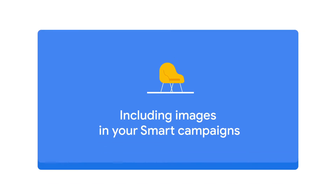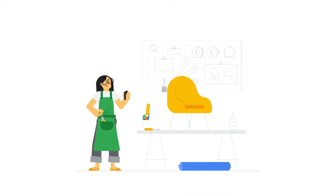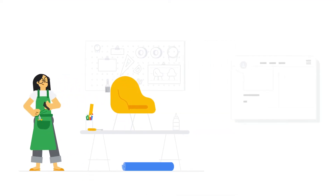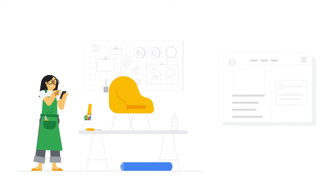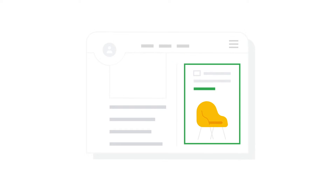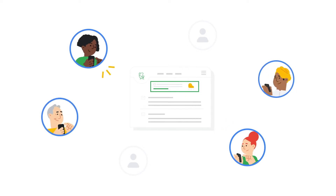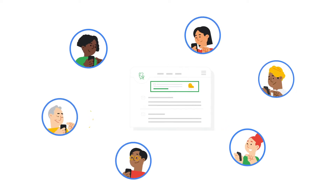Including images in your smart campaigns. Did you know that image ads can run on over 2 million sites and reach over 90% of people on the internet? When you add images to your smart campaign ads, like product shots or your business logo, you help them stand out more on YouTube, Gmail, and millions of partner sites across the web.